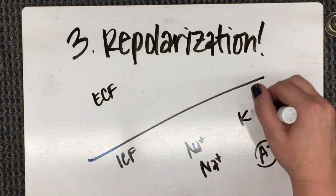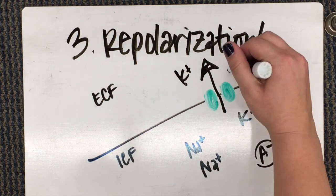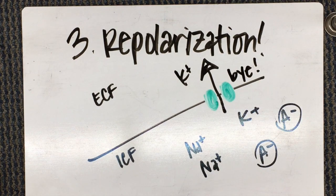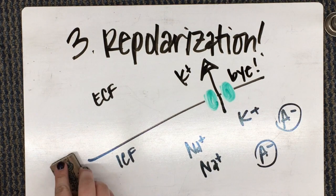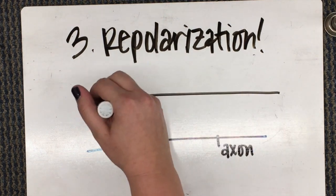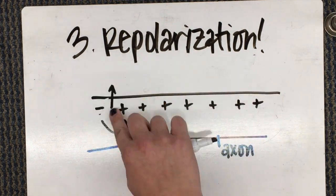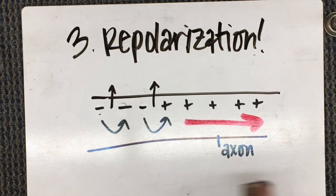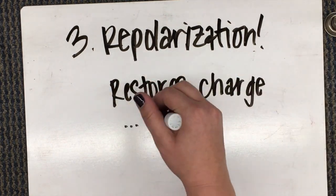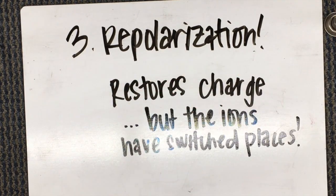Our third step is repolarization. During repolarization, now that the cell is overcrowded with positive charge, potassium channels open, allowing potassium to exit the cell. This occurs in a wave-like propagation along the length of the axon. This restores the charge of the cell, but our ions have switched places.